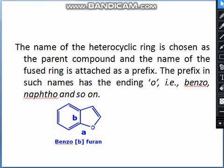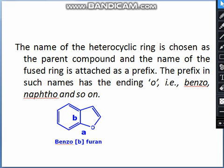The name of the heterocyclic ring is chosen as the parent compound, and the name of the fused ring is attached as a prefix. The prefix should end with 'o', such as benzo or naphtho. Here we can see a benzene ring attached with a furan ring — it is a fused ring. As stated, the parent compound named with the fused ring prefix gives us benzofuran.